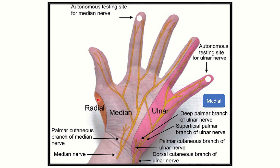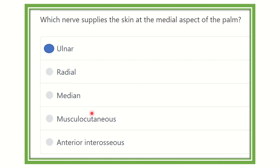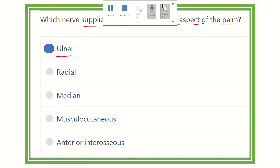Our final answer is the ulnar nerve. The ulnar nerve supplies the skin located at the medial aspect of the palm of the hand. Thank you.